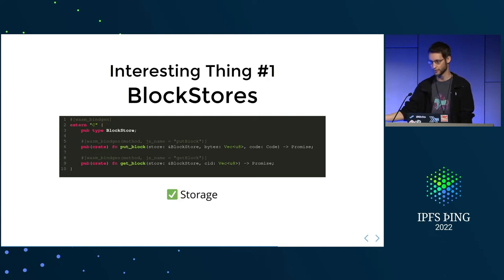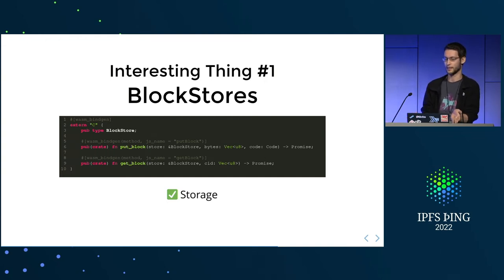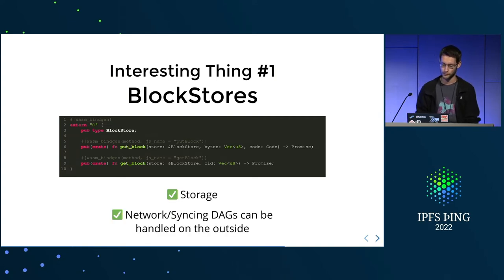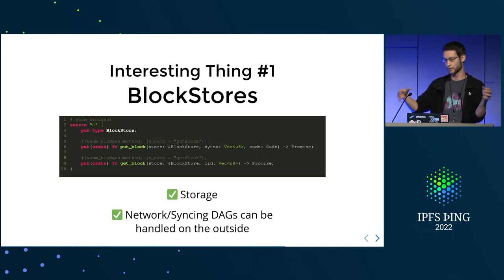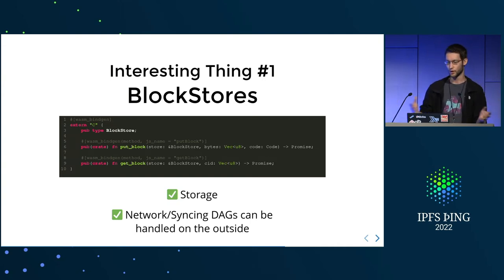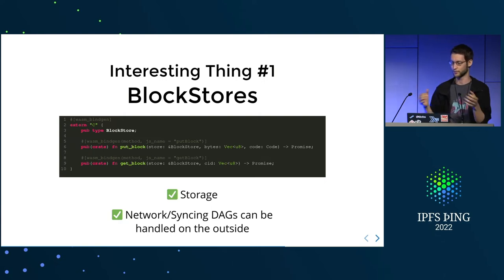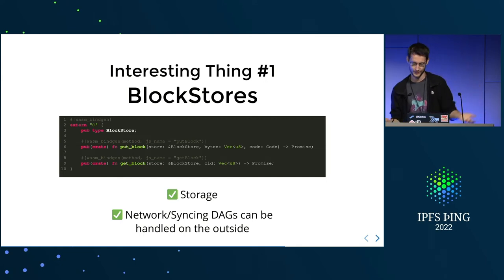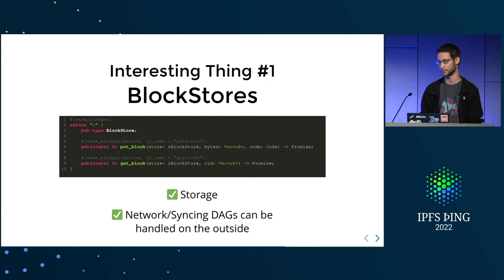A block store is not the best abstraction for everything. You mainly want to have it in low-latency environments — you don't want this interface when it takes a long time to go back and forth. In our use cases, this has worked out fine so far. Another interesting side effect is you can build different things that all connect to a block store, like your networking thing that syncs your DAGs with other machines. These can all be different things that all connect to this block store, and they don't have to know about each other. It's very much related to what Iroh is building. I think it's just a good abstraction to build around in low-latency environments.